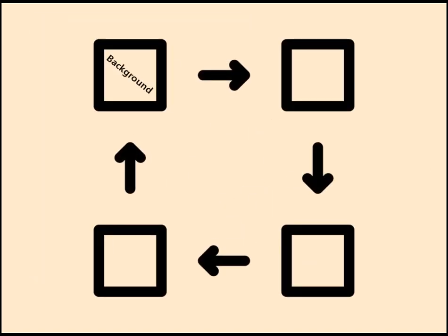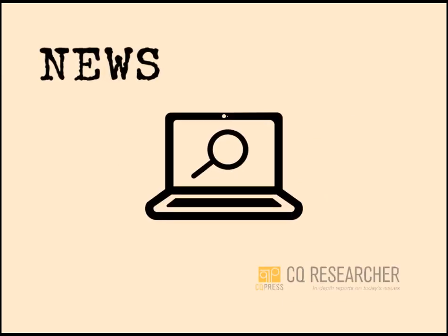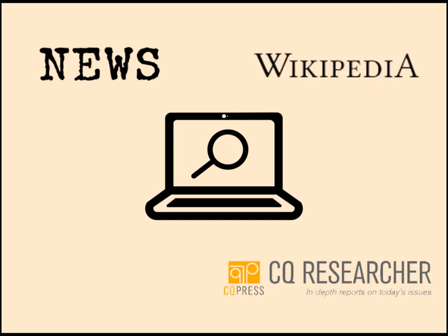This process of doing background research to develop your topic is something you'll probably do more than once. You might start with one topic, read a little, change your mind, and try another. You might also start with a general idea of your topic and jump right into looking for background information in the news, CQ Researcher, Wikipedia, and Discovery Search. This process of learning and brainstorming will help you develop a topic that interests you and fits the requirements of the assignment.